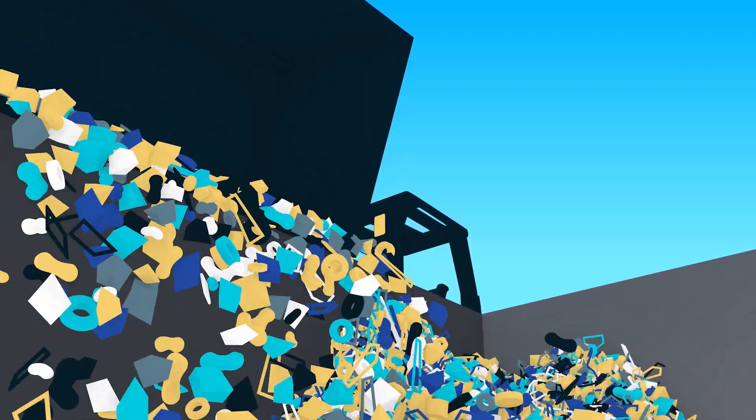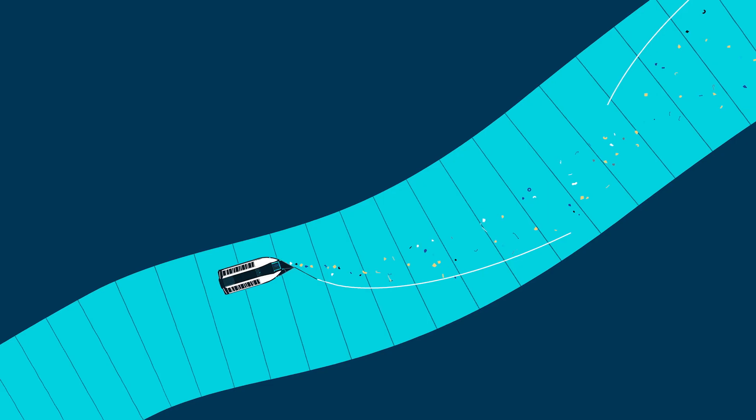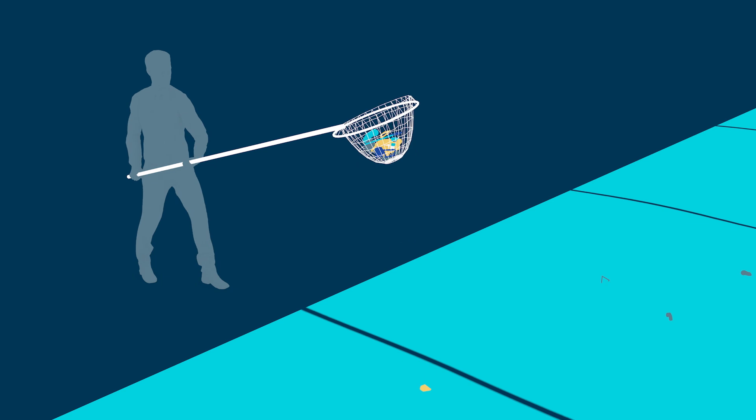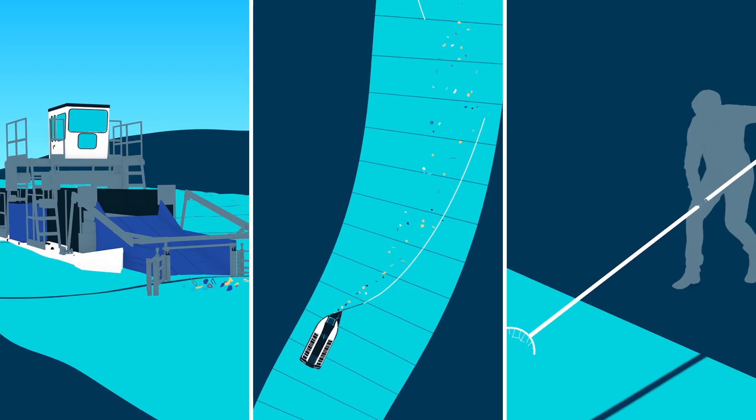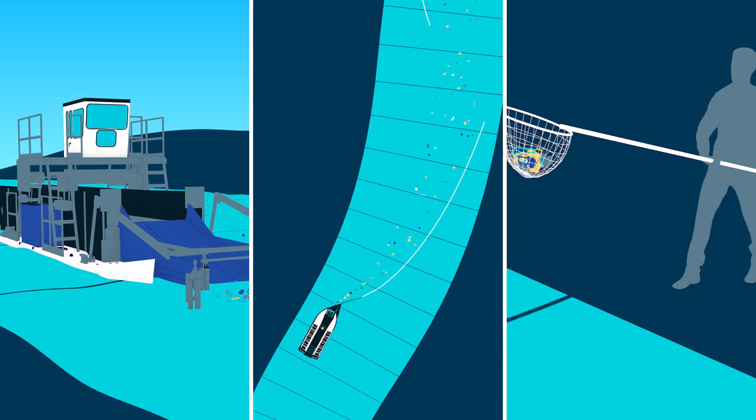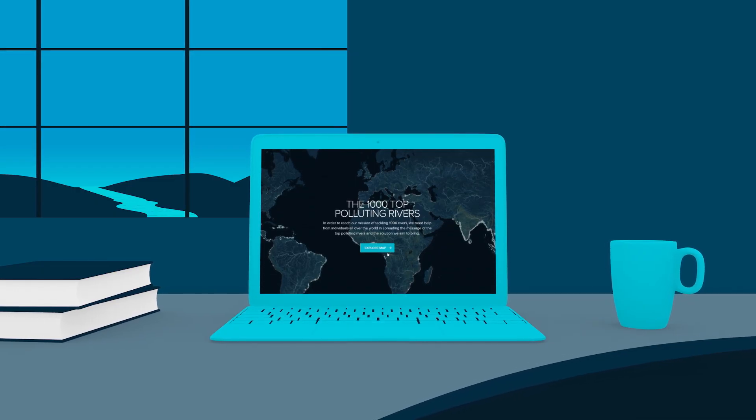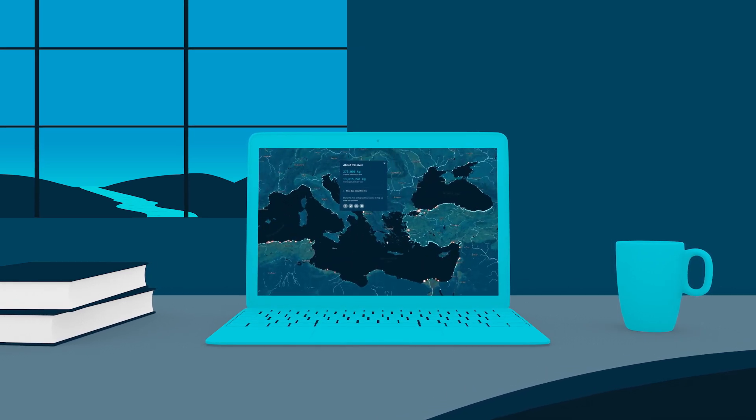The Ocean Cleanup has already begun working with governments and partners around the world to apply the right solutions to the right rivers, and encourages others to take part. Together, we can clean our rivers and rid the world's oceans of plastic. Explore the 1,000 most polluting rivers, and see how you can help at theoceancleanup.com.